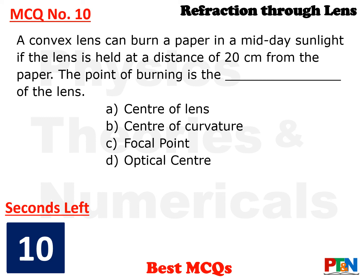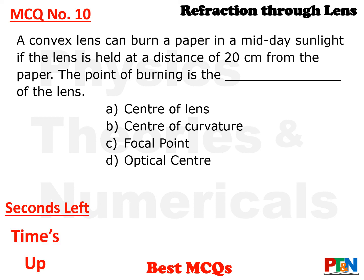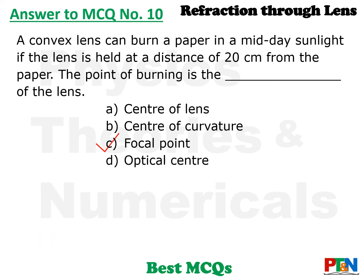Next — and in fact the last MCQ for this video. A convex lens can burn a paper in midday sunlight if the lens is held at a distance of 20 centimeters from the paper. The point of burning is called what for the lens? Options: center of lens, center of curvature, focal point, optical center. 10 seconds time. Time is up. The answer is focal point. That point is called the focal point of the lens.